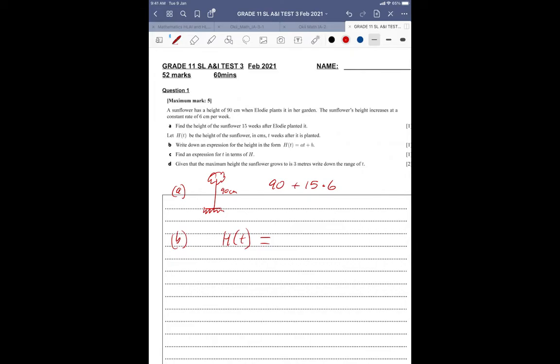So it's 15 weeks at 6 centimeters per week. Still the same calculation, though, yeah? So this is now, well, there's a 90 plus, there's 6 centimeters times by the number of weeks. All right?